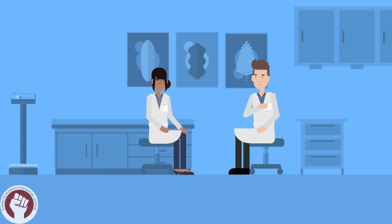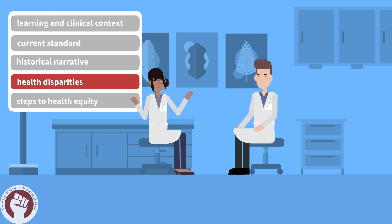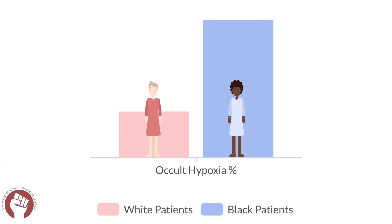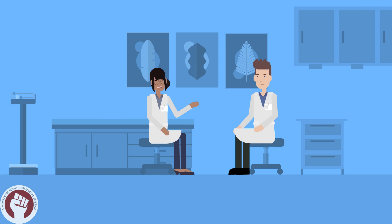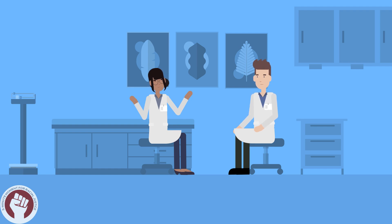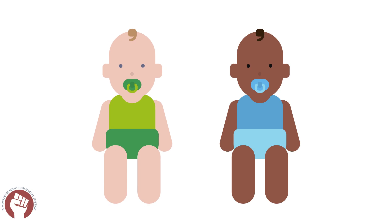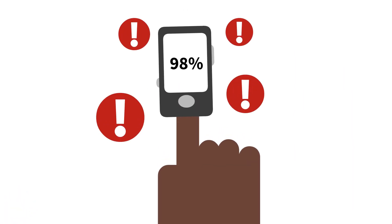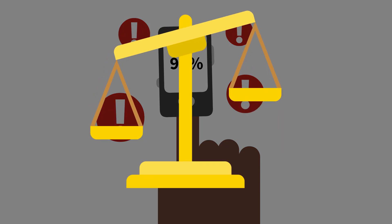Is there evidence for how these inaccuracies have impacted clinical outcomes for our patients? Unfortunately, yes. A recent study in adults found that the incidence of occult or undiagnosed hypoxemia was three times greater in Black patients than white patients. There is greater variability in pulse oximeter accuracy in patients self-identified as Black, followed by Hispanic, Asian, and then white. This difference was also noticed between Black and white infants, which led to an increased incidence of occult hypoxemia in Black children.